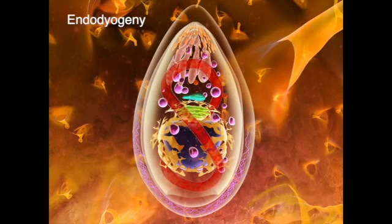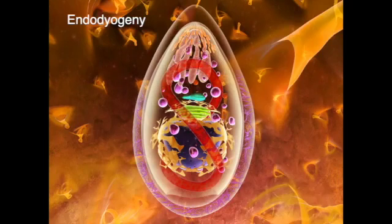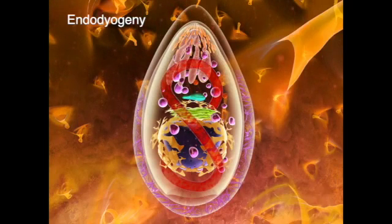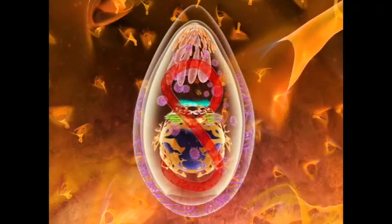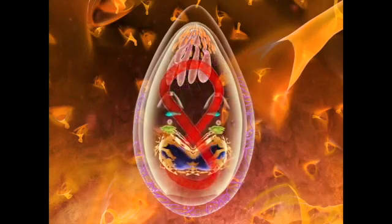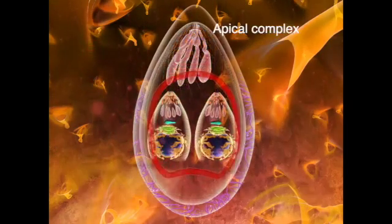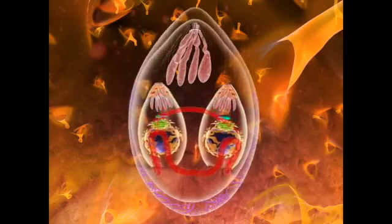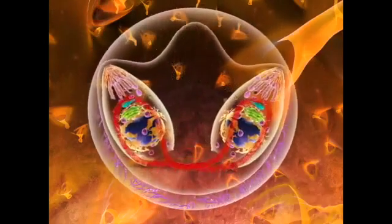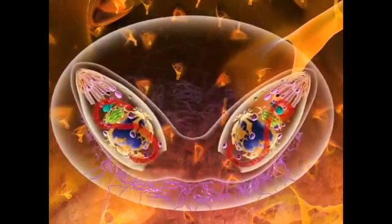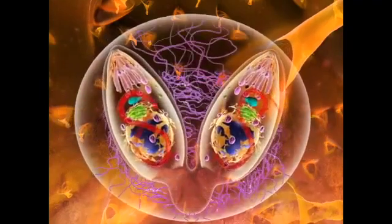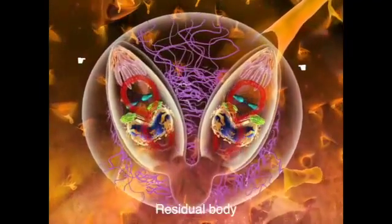During endodiogeny, two daughter cells are formed inside the mother cell. The mother cell keeps the apical complex until late in the process, while the nucleus and other organelles duplicate and are distributed between the future daughter cells. Two new apical complexes and the inner pellicle form.